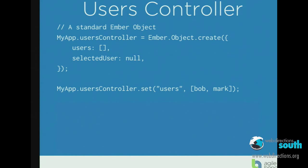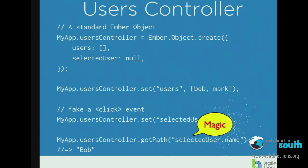We'll also have a selected user. We're going to use the selected user to say: when I change the selected user, I want to update the list of tasks on the right-hand side. From the users controller, we can actually navigate into another object — the selected user object — and pick out its name. So we can traverse a graph of objects by using a string. It's extraordinarily powerful.